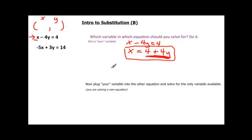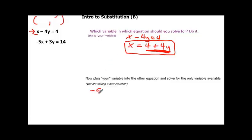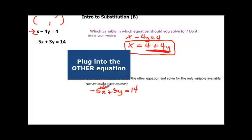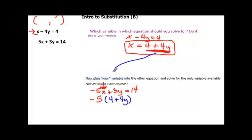And now I've got my expression that I can substitute. And remember, this is the part that we're going to substitute. We had negative 5x plus 3y equal to 14, but remember, we're going to substitute for x. So, negative 5 times our x, but this time x is 4 plus 4y.